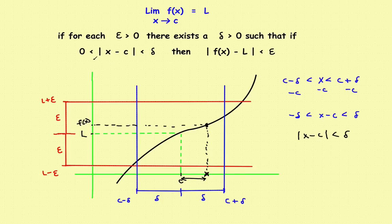The greater than zero part says that you can let this distance get as small as you want to, but you can never let x equal c because the limit is only defined as x approaches c. So since x can never equal c, this distance can never equal zero. So that entire statement just says pick a value of x that is inside the box — in other words, less than delta.